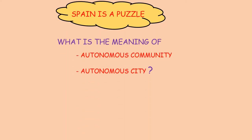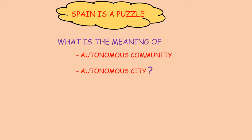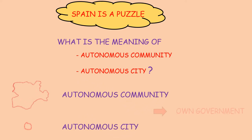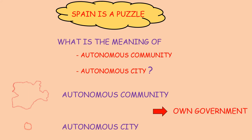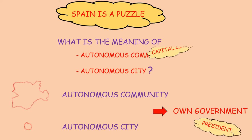What is the meaning of autonomous community or autonomous city? They have a government with a president and a capital city.